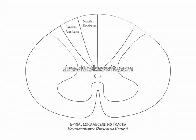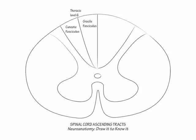Write thoracic level 6 over the posterior intermediate septum to indicate that the gracile fasciculus carries large fiber sensory information from the lower body, T6 and below, and the cuneate fasciculus carries sensory information from the upper body, T7 and above. A mnemonic for the gracile fasciculus is that ballerinas must have good sensory input from their feet to twirl gracefully.